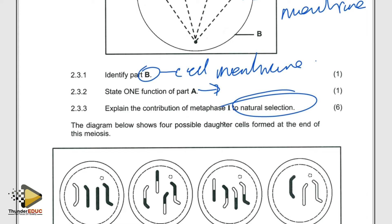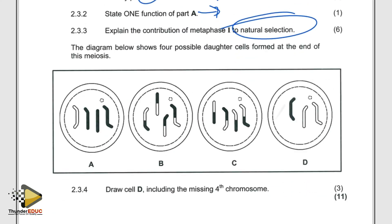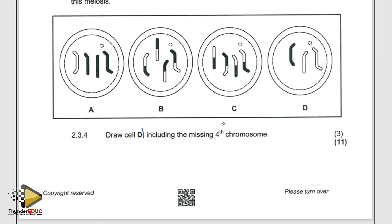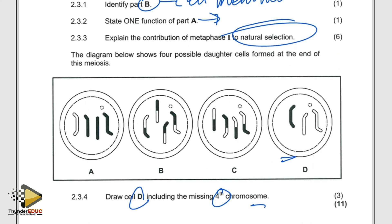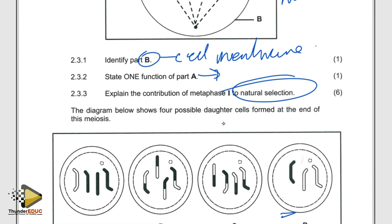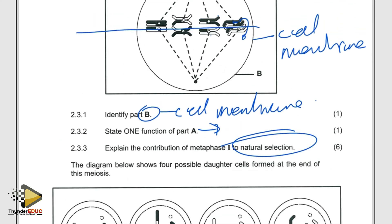The next question shows four possible daughter cells at the end of meiosis and asks you to draw cell D including the fourth chromosome. They want to see the variations happening. I told someone yesterday that yes, you need to shade, because those shaded areas carry marks.